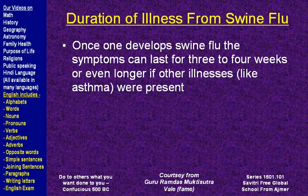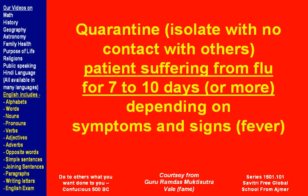Once symptoms start, recovery can take three to four weeks or longer if someone has a pre-existing illness like asthma. However, the quarantine or isolation period is the first seven to ten days after the onset of symptoms, after which your doctor will decide whether a longer period is needed. During those first seven to ten days, you must remain in isolation so you do not pass your flu to others.